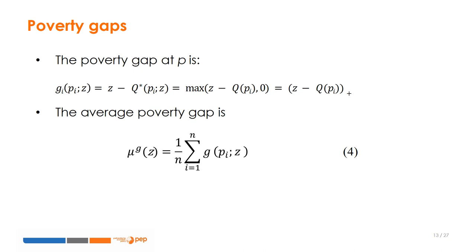We now introduce two very common concepts in poverty analysis: the poverty gap and the poverty line. The poverty line in our context is the monetary threshold at which all individuals with an income below this threshold are defined as poor. The poverty gap is a measure of how far a poor individual is below the poverty line. The poverty gap function indicates the difference between the poverty line and income for each percentile i.